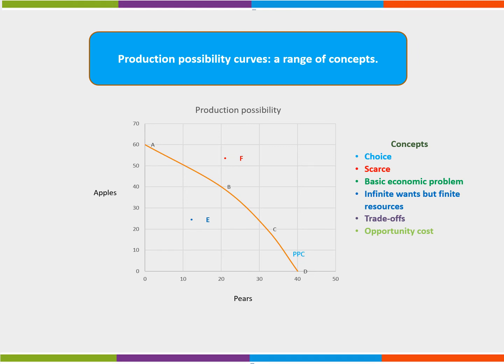The PPC can also be used to show the concept of conflicting objectives. Should an economy invest in producing consumer goods that will benefit consumers today, or should it produce capital goods which will bring a stream of income in the future? We can also see the concept of productive efficiency, using the minimum inputs to produce the maximum output at the lowest cost. This can be seen anywhere along the PPC.